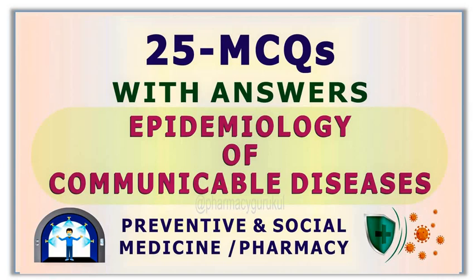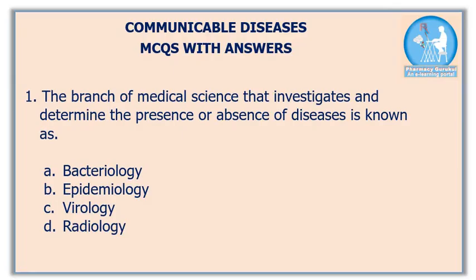Hi friends, here I brought you 25 multiple choice questions with answers from the subject Preventive and Social Medicine. All questions are related to communicable diseases. First question: the branch of medical science that investigates and determines the presence or absence of diseases is known as — bacteriology, epidemiology, virology, or radiology?